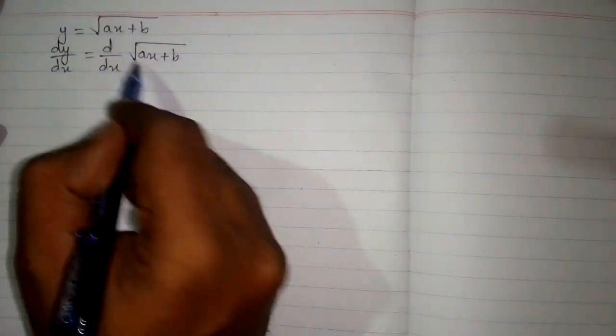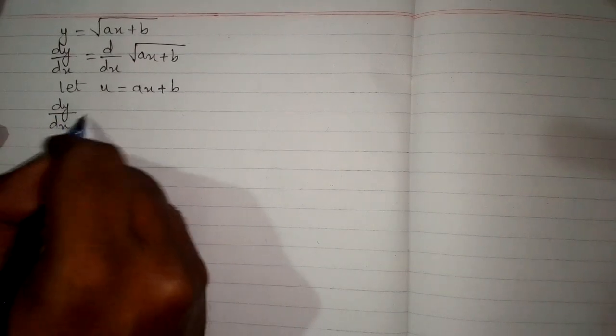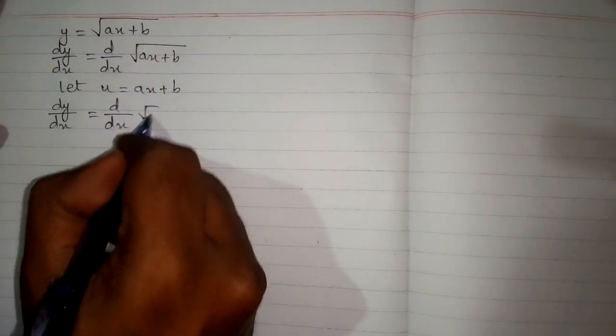Then suppose the whole same thing inside the root is u. So let u equal ax plus b. And now dy by dx equals dy by dx of square root of u.